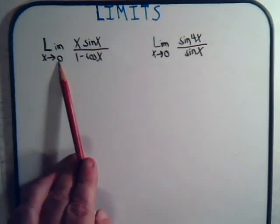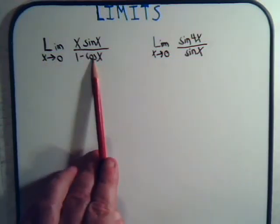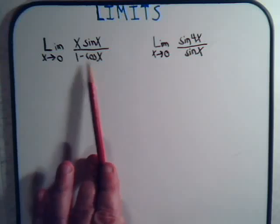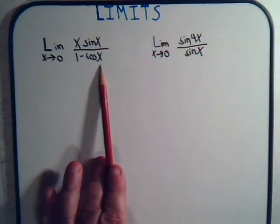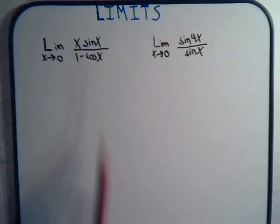Clearly just taking 0 and plugging it in here doesn't work. Because this would be 1, and 1 minus 1 is 0. This is going to be 0 on top. So we end up with 0 divided by 0. And as we've explained in previous videos, that's totally meaningless. It's indeterminate, so that doesn't get us very far.